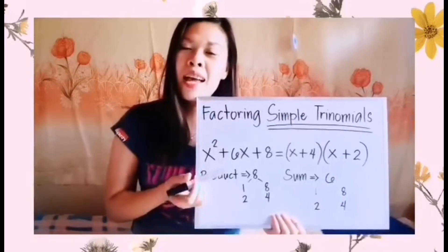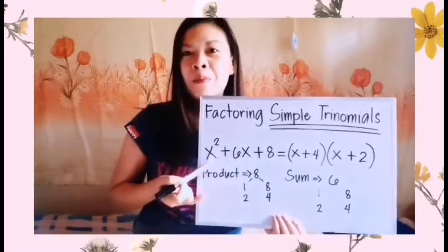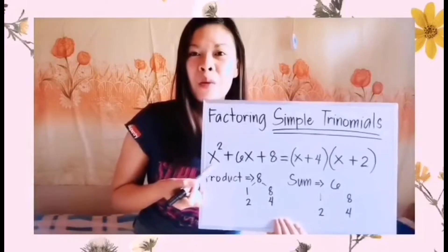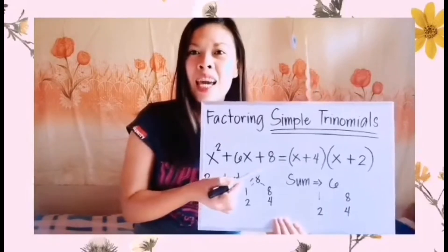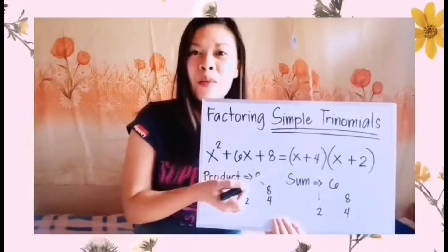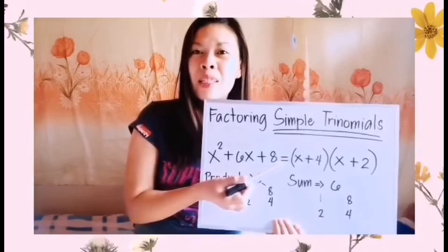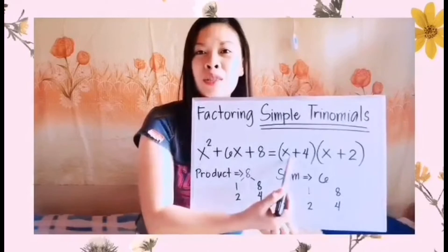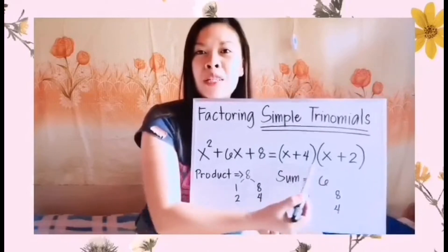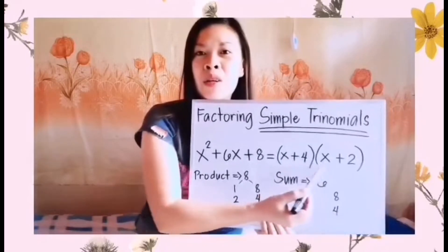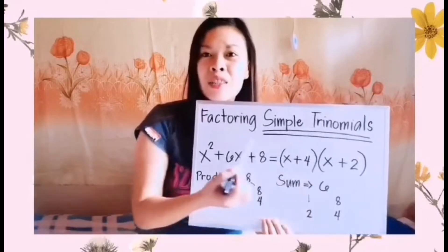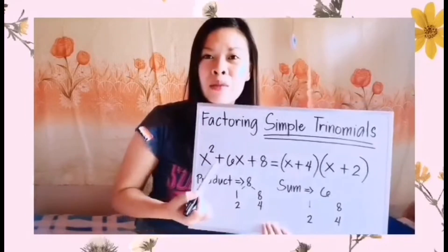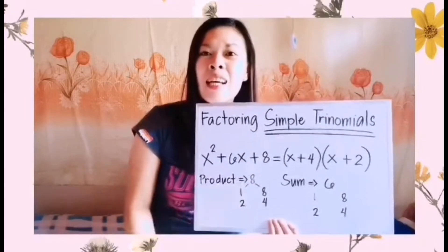Let me show you the answer to our first example. Our first simple trinomial is x squared plus 6x plus 8. It equals the quantity of x plus 4 times the quantity of x plus 2. These two binomials are the factors of x squared plus 6x plus 8.